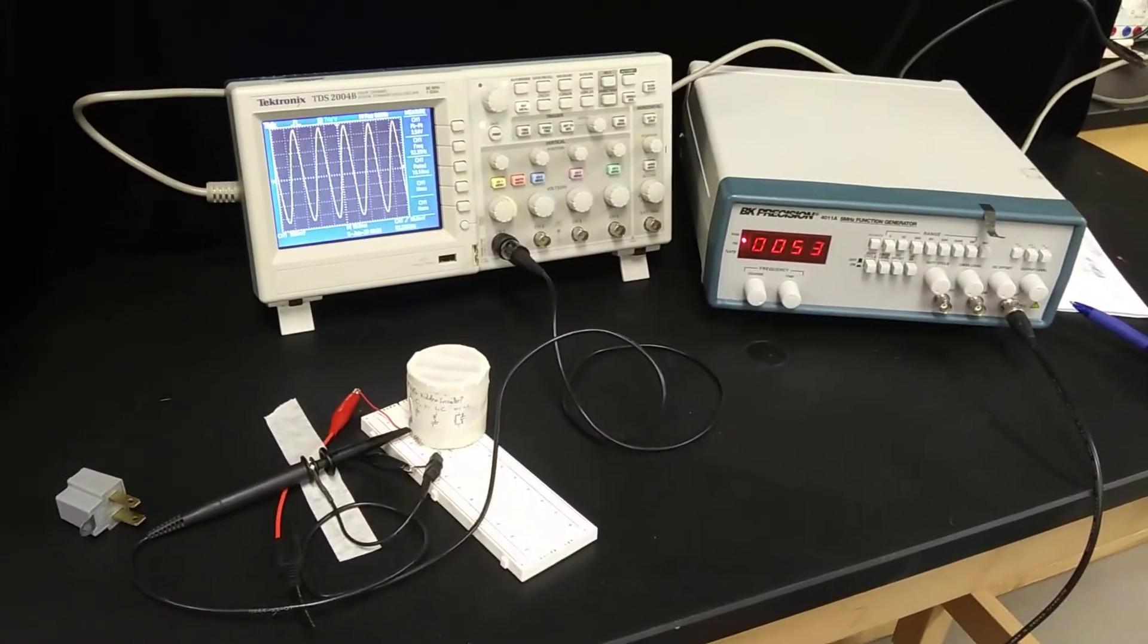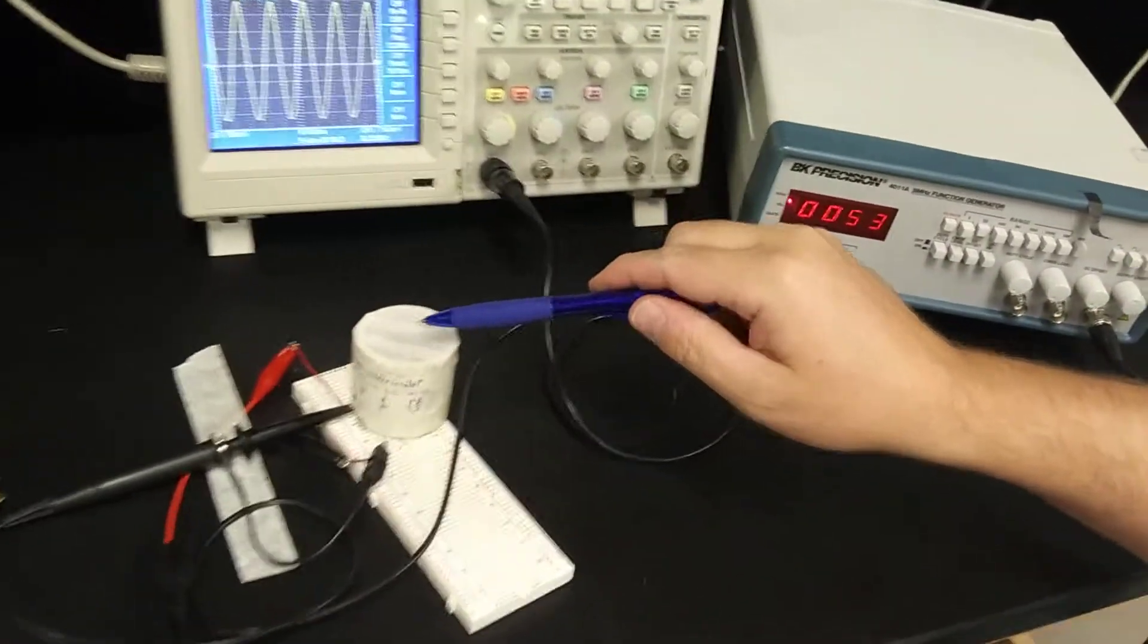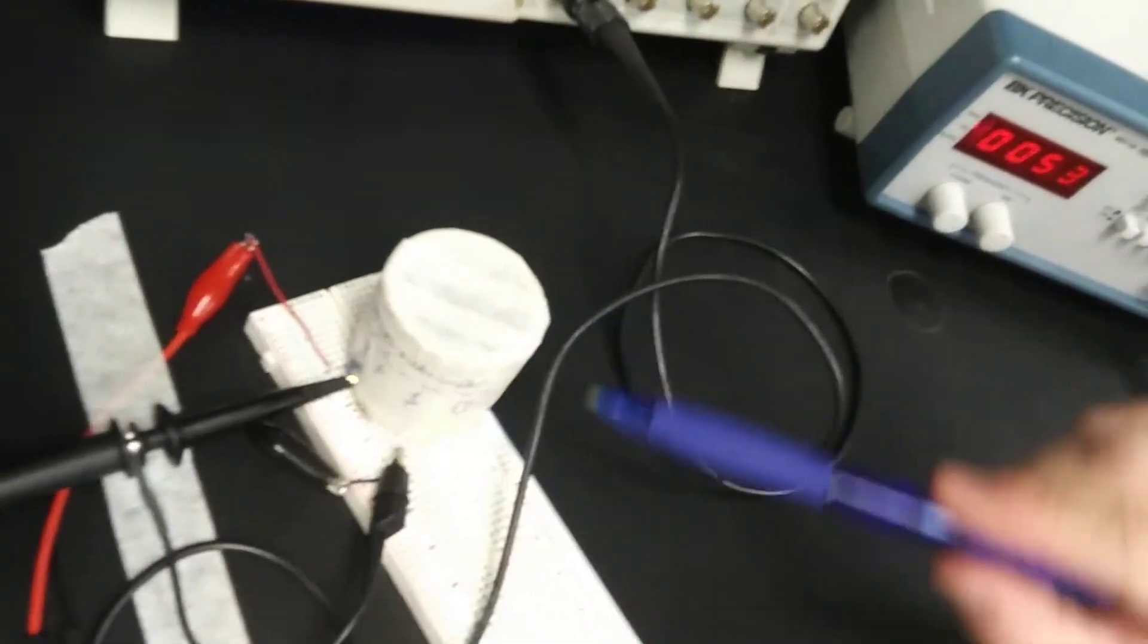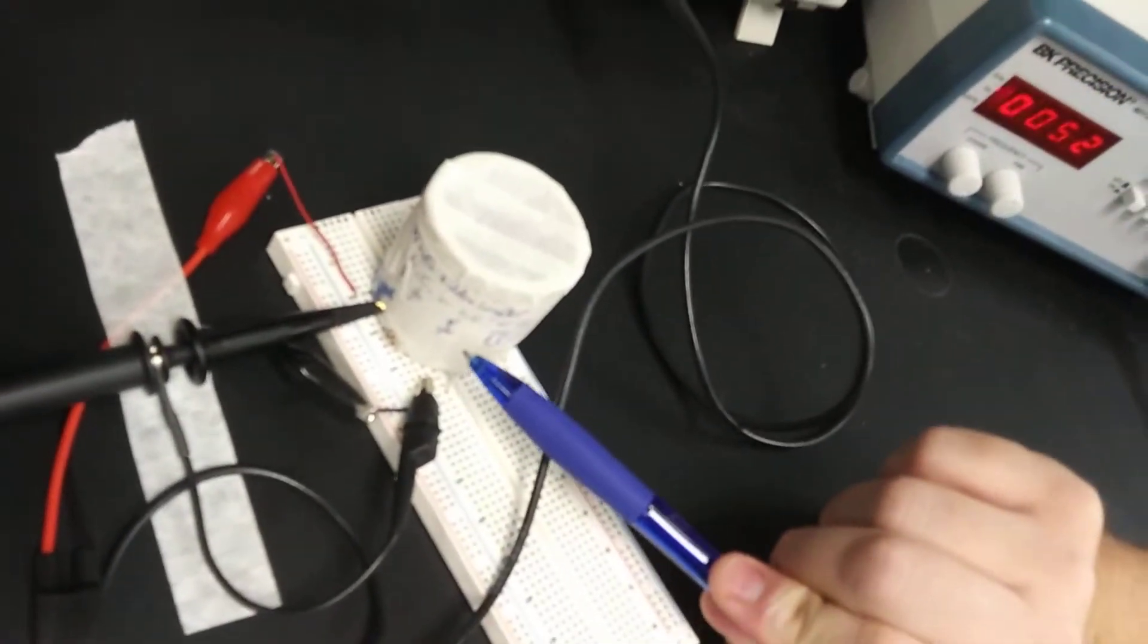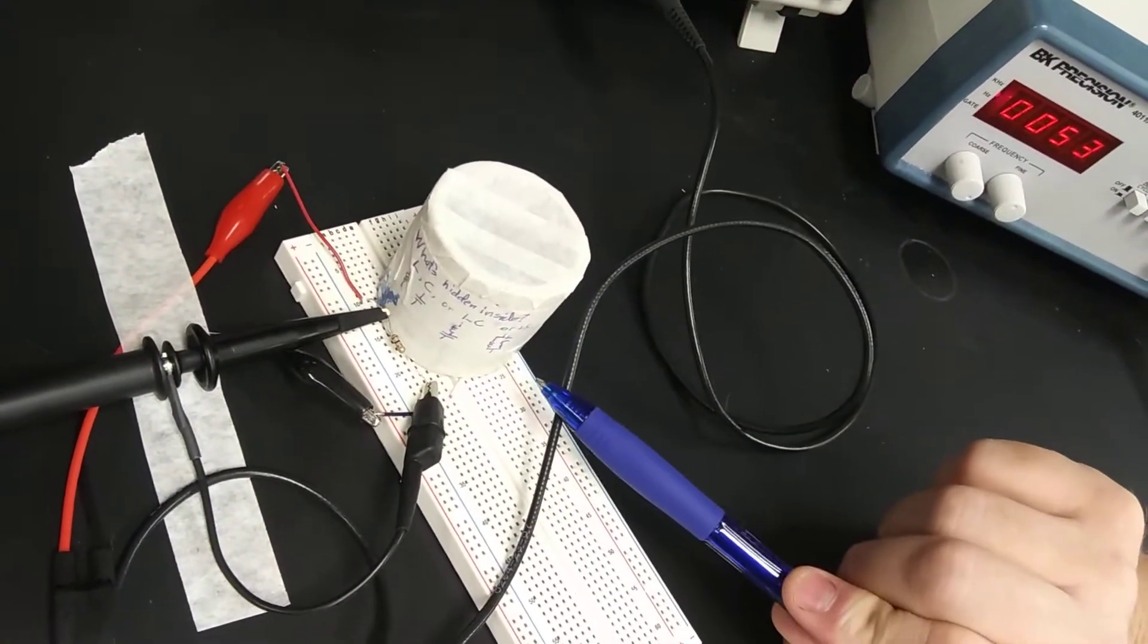Here I have a mystery object, right here, in parallel with the resistor. This mystery object is either an inductor, a capacitor, an LC in series, or an LC in parallel.